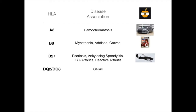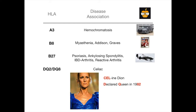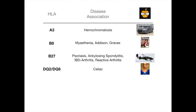HLA DQ2 and HLA DQ8 are associated with celiac disease. There are mnemonics out there — First Aid has something to do with Dairy Queen — and I really don't like it. My mnemonic is that celiac reminds me of Celine Dion. An interesting little tidbit: Celine Dion burst onto the scene in 1982 — she won some singing competition. My mnemonic is that Celine Dion was declared queen in 1982. The eight and the two in 1982 tell me about DQ8 and DQ2, and 'declared queen' gives you DQ. Celine Dion declared queen in 1982 — DQ8 and DQ2. My heart will go on. Titanic. Legendary.